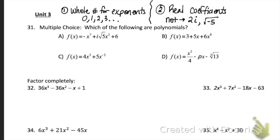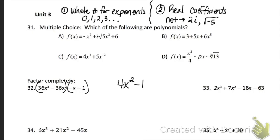Problem 31 asks you to determine which of the following are polynomials. The two things to remember: first, the exponents have to be whole numbers; second, the coefficients have to be real — that means you can't have a 2i or a square root of negative 5. Problem 36 asks you to factor completely — check for a GCF, group the first two terms, group the last two, pull out a common factor from each pair, and rewrite. Watch for difference of squares in problem 32 — for example, 4x² minus 1 factors into (2x − 1)(2x + 1).